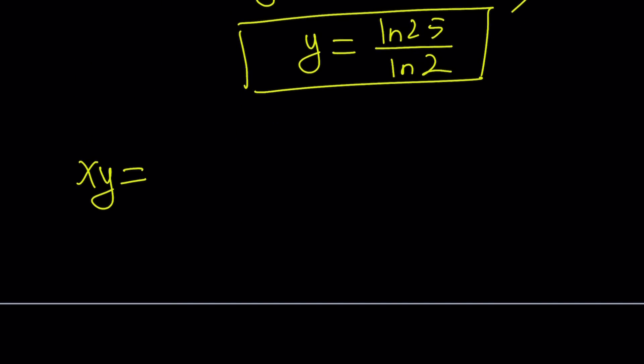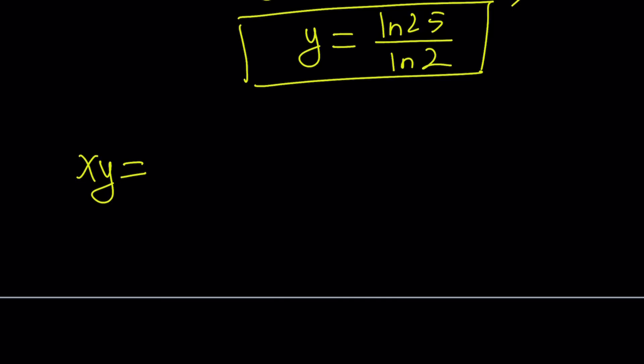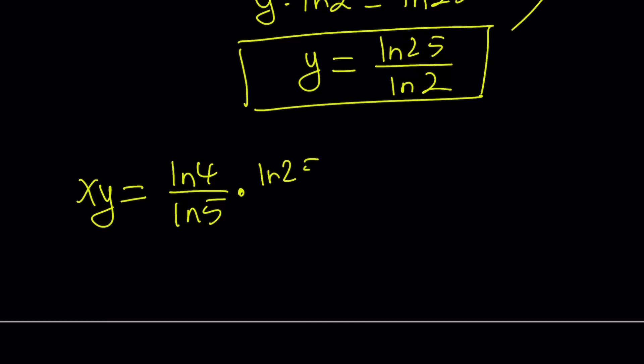x is ln 4 over ln 5. Again, ln is natural log. And then y is ln 25 over ln 2. Awesome. And then this is a product and you can just multiply, right?